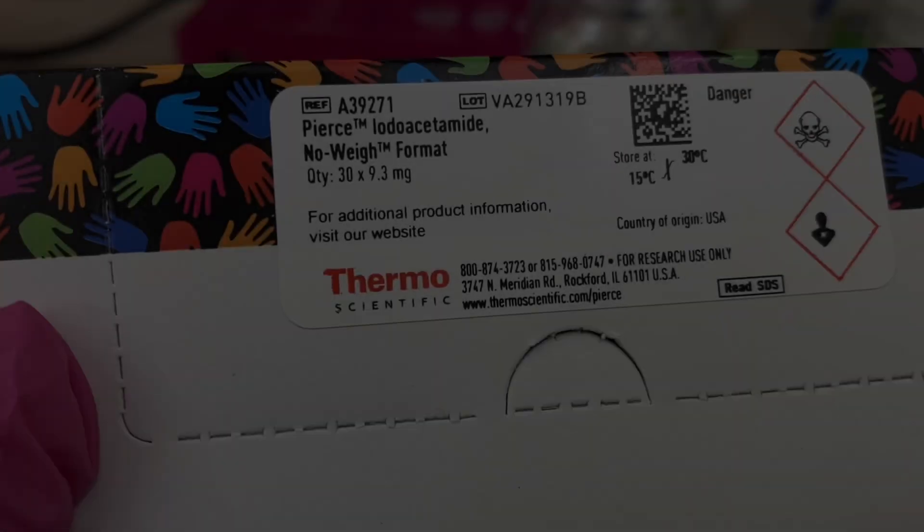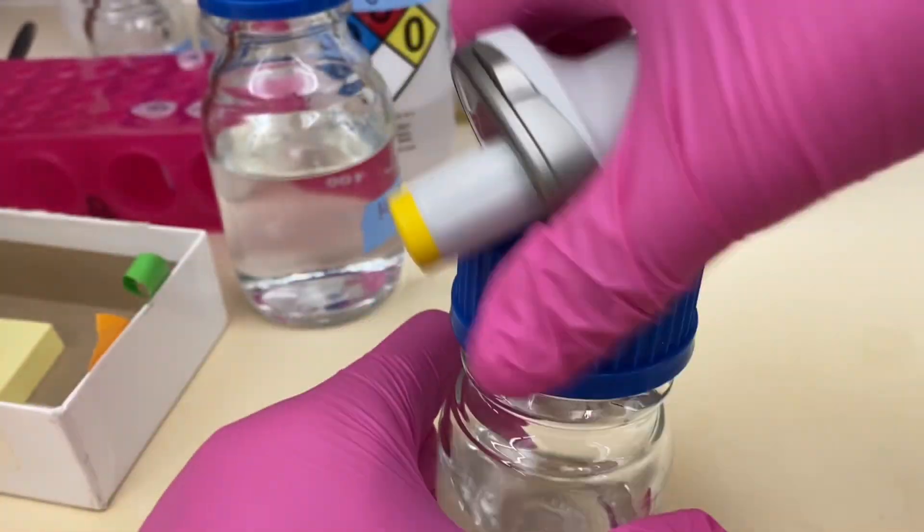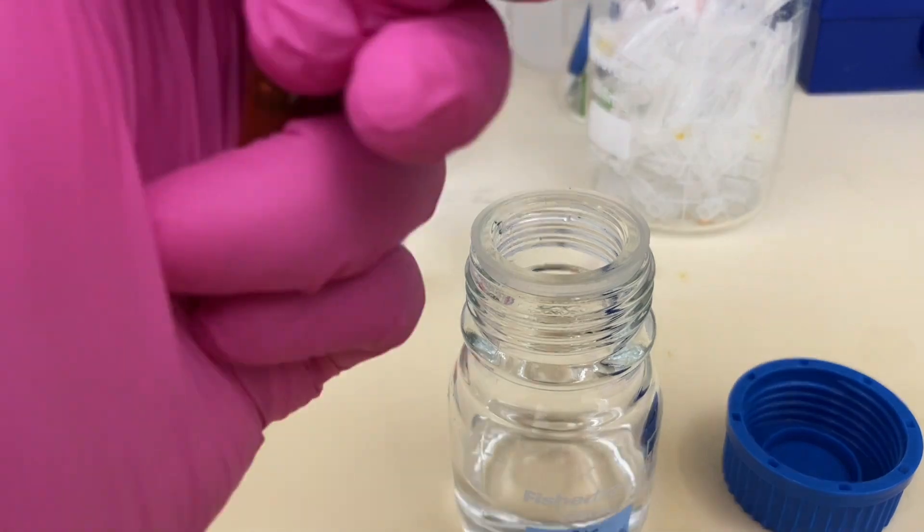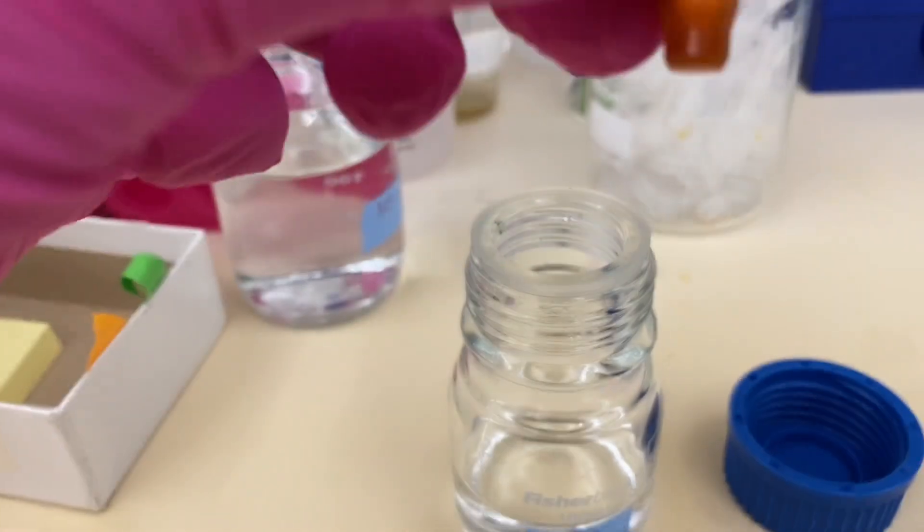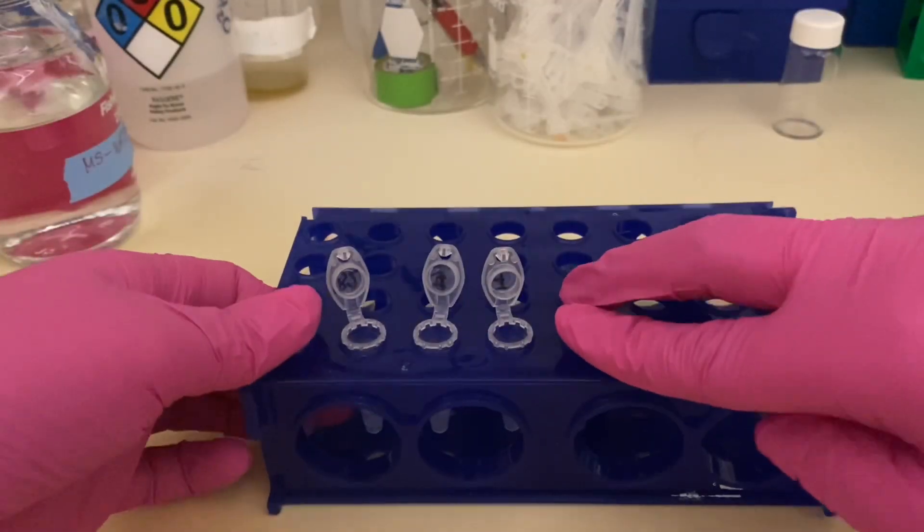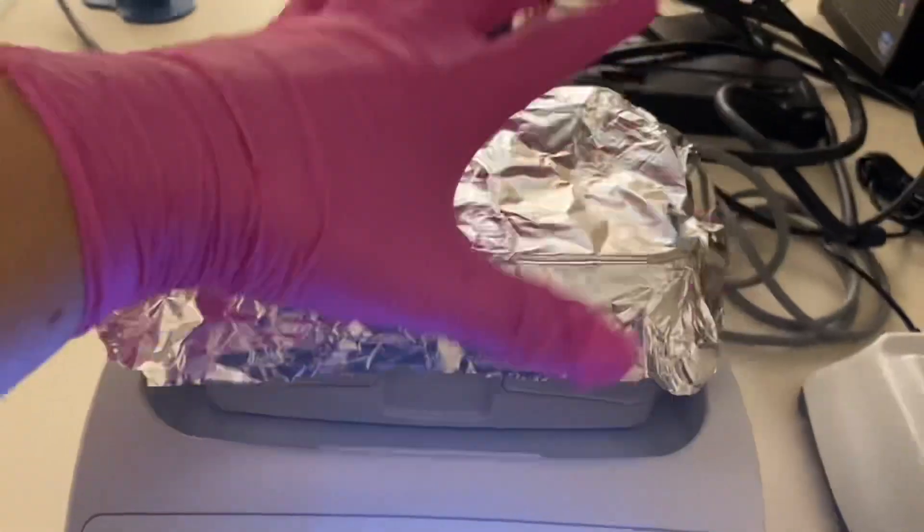The next step is alkylation as we want to lock those cysteine groups so the protein cannot form again disulfide bonds as they do tend to rebond sometimes. This step takes 20 minutes in the dark and I will be using iodoacetamide from Pierce. As you can see it comes in these little vials. I will make 375 millimolar iodoacetamide in ambic. I'm going to close all of my tubes now and then I'm going to shake them in the dark for 20 minutes. I'm going to cover my tubes with a foil. The shaking is at the room temperature.